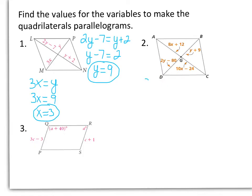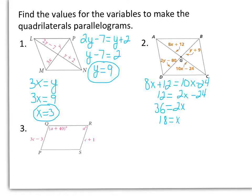So we can say that 8x plus 12 equals 10x minus 24. Subtracting 8x, we have 12 equals 2x minus 24. Adding 24, we have 36 equals 2x. Dividing both sides by 2, we get x equals 18.